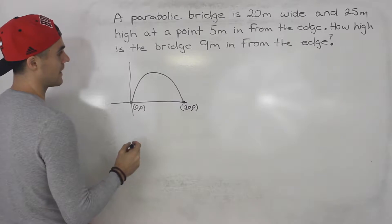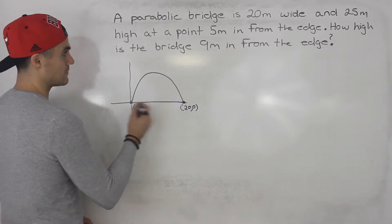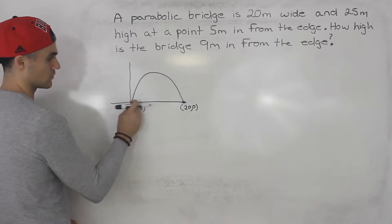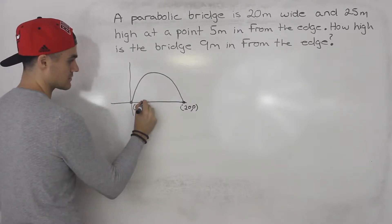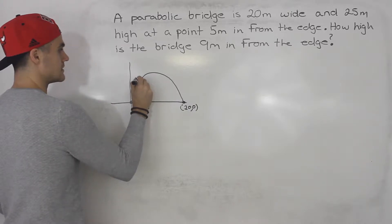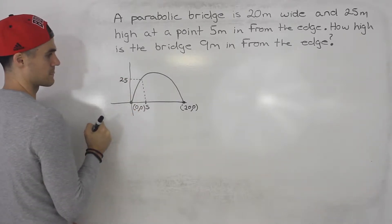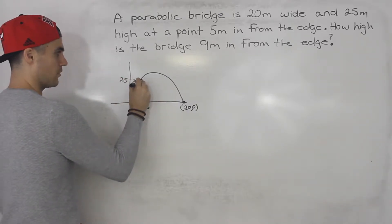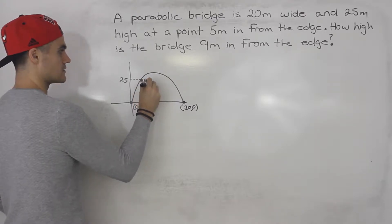And then we're also told that a point five meters in from the edge, so you can go from this edge or from this edge. I usually like to go from this edge. So five meters in, so let's say that's like here, the height of the bridge is what? It's 25. Right? So this point on the parabola is 5 and 25.